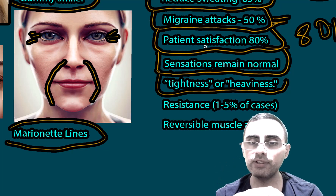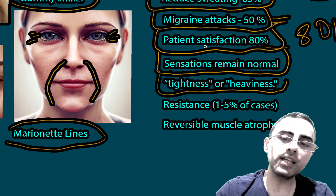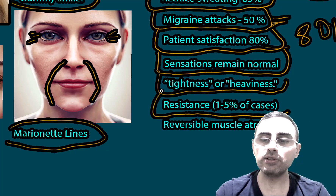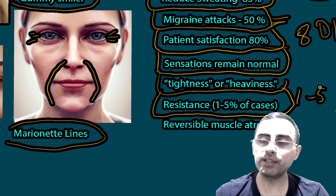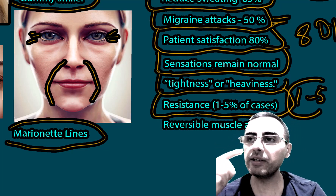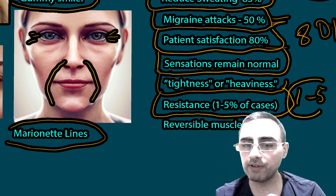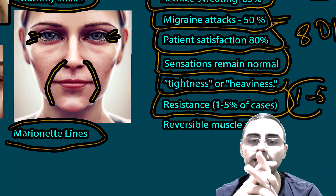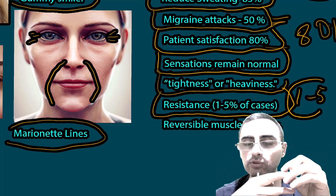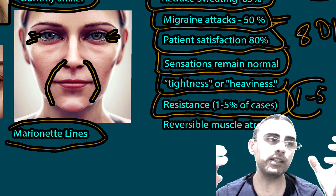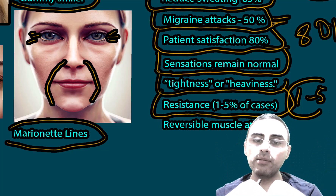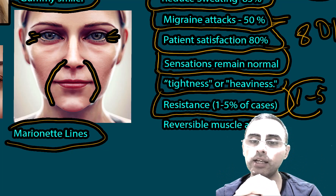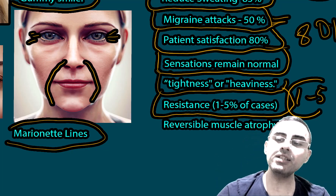Botox resistance occurs in around one to five percent of cases, meaning the person needs increasingly higher dosages to achieve the same effect. These cases are correlated with antibody production against botulinum toxin, where the body neutralizes it so it cannot be effective enough — but such cases are rare.